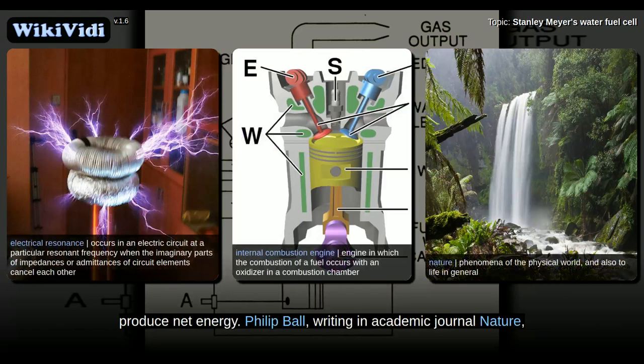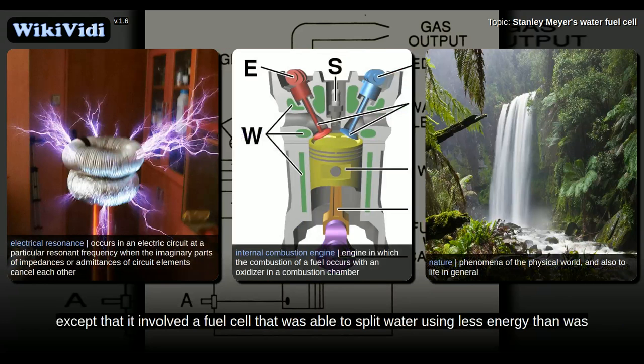Philip Ball, writing in academic journal Nature, characterized Meyer's claims as pseudoscience, noting that it's not easy to establish how Meyer's car was meant to work, except that it involved a fuel cell that was able to split water using less energy than was released by recombination of the elements.